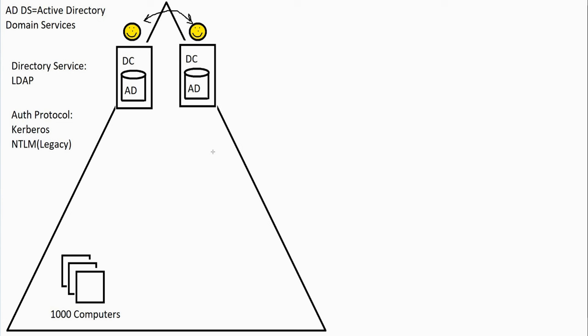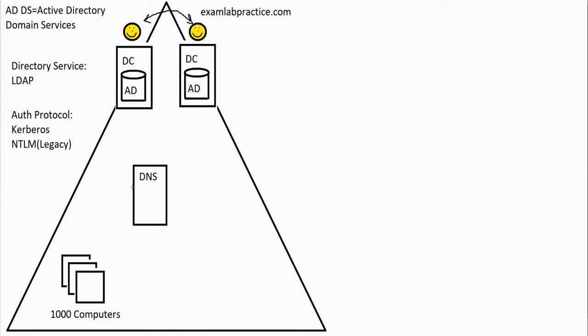All machines have to have a name, and that name must be associated with an IP address. There is a service called DNS — Domain Name Service — that we use all the time on the internet. Our domain must have a name. Usually when you name your domain, you name it after your company, and many people name their domains based on their web presence. For example, my domain might be called examlabpractice.com. We need a server in our domain that can associate names and IP addresses — that's called a DNS server, and it has a DNS database.